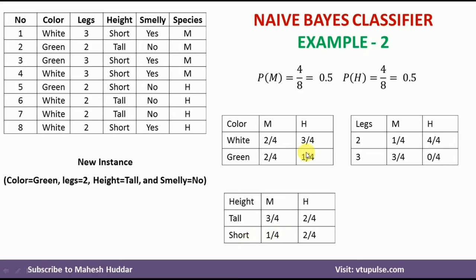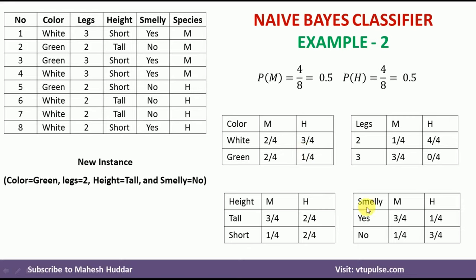Similarly, smelly is the last attribute, with possible values yes and no. Yes appears three times in M examples, so the probability is 3/4, and one time in H, giving 1/4. No appears one time in M, giving a conditional probability of 1/4, and three times in H, giving a conditional probability of 3/4.